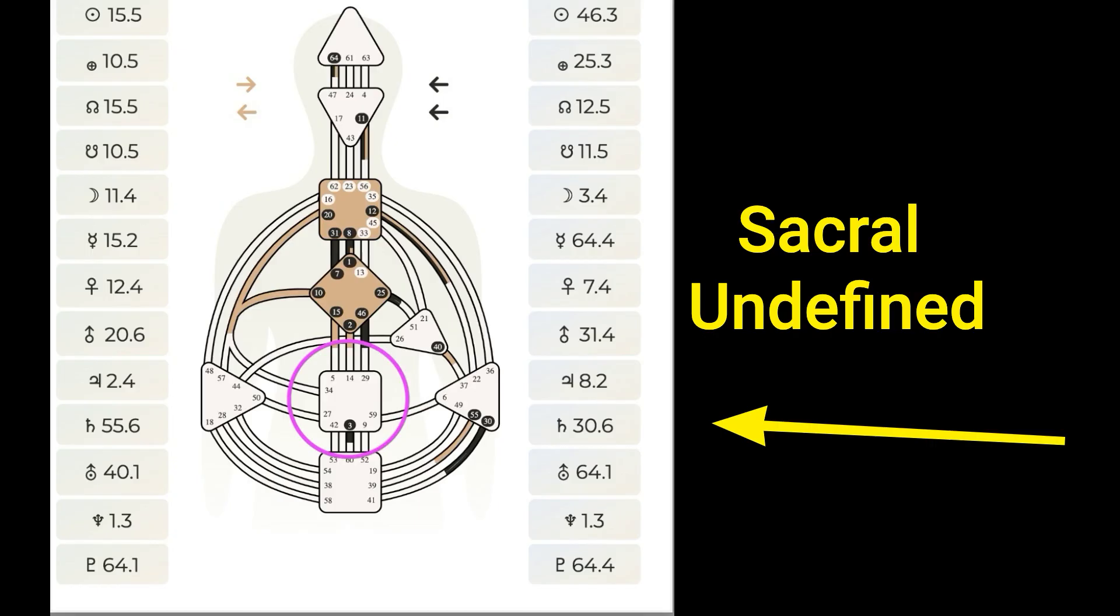So as you can see in our example, the only thing I want you to take from this example (this is one projector) is just this part. It's just the fact that they have an open sacral. And you can see that they have a lot of open centers. Projectors generally have a lot of open centers.